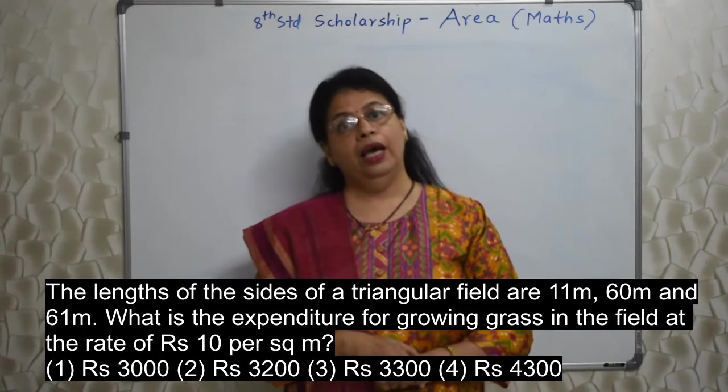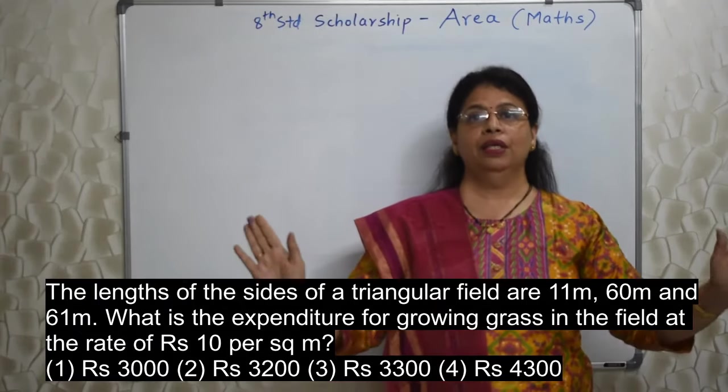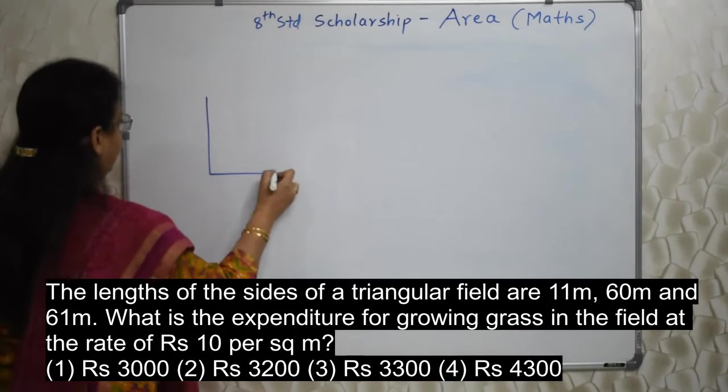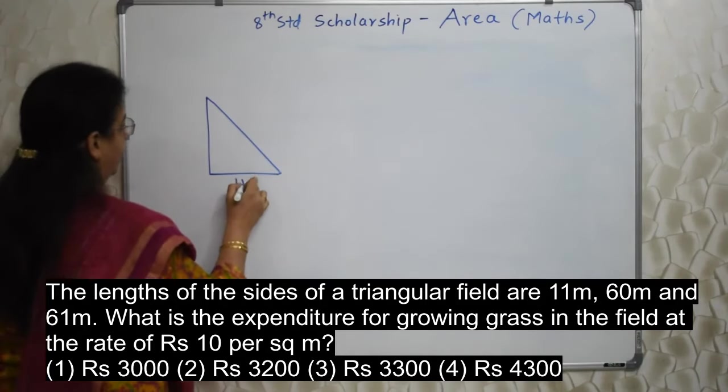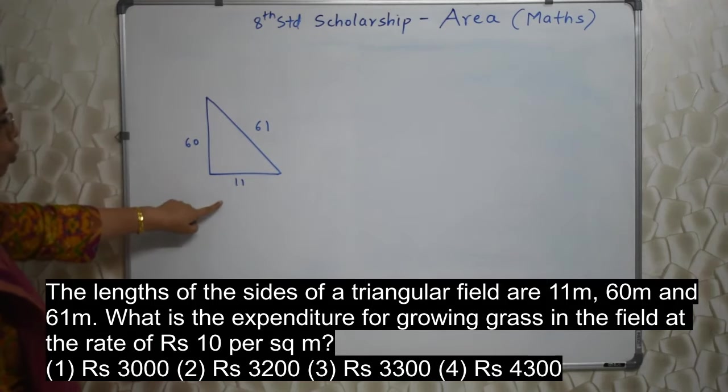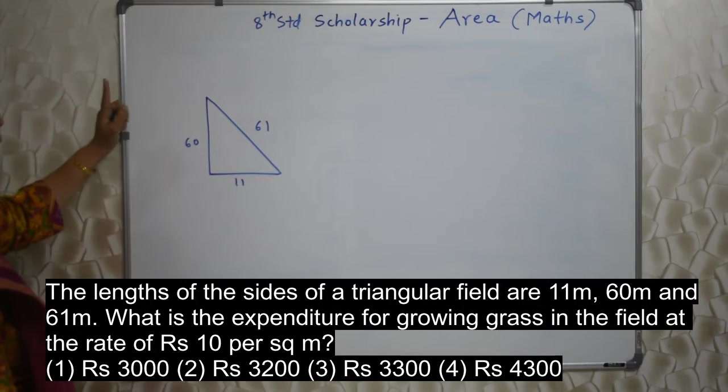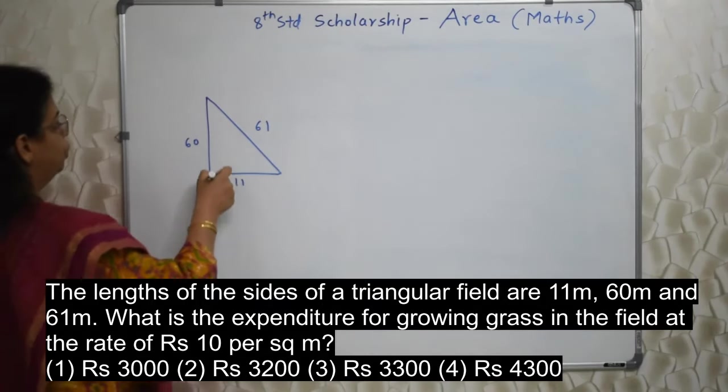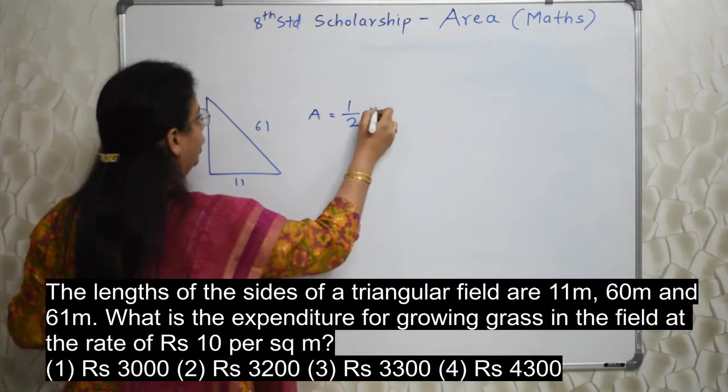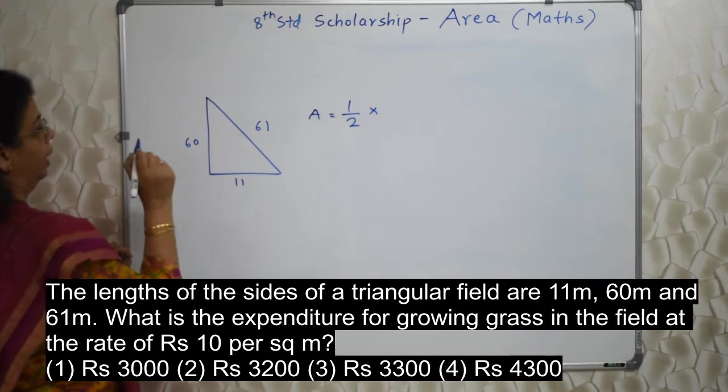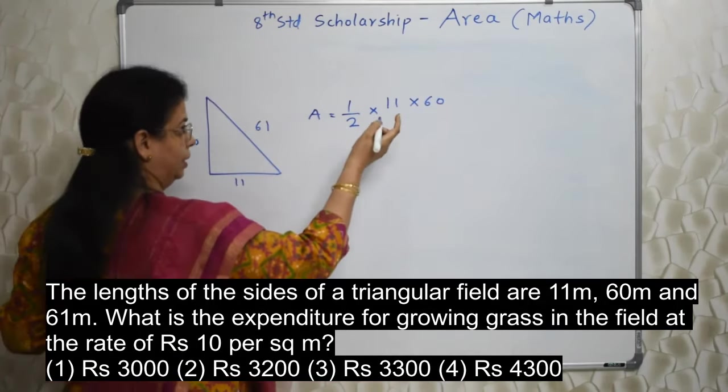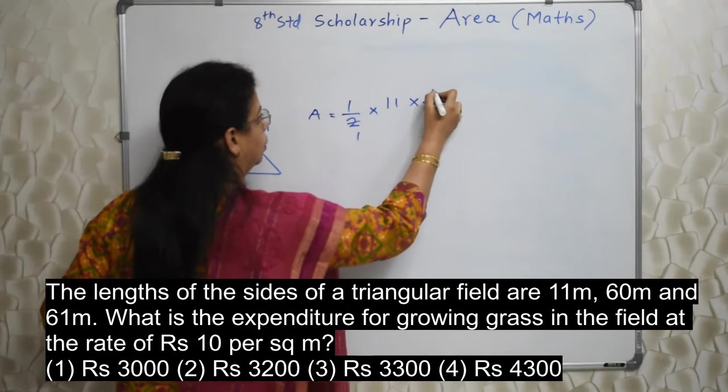They are Pythagorean triplets. In case you know that, 90% of the problem is solved. Pythagorean triplets means that triangular field must be in the shape of right angle. One side must be 11, other must be 60 and hypotenuse must be 61. Immediately you will know looking at the numbers that triangular shape is right angle. Once you know this, finding out the area is not a problem. What is the formula of a right angle triangle's area? Half into two sides which make a right angle. In this case it is 11 and 60. Half into two sides which make right angle. So here now we will do the division. Ultimately 11 into 30.